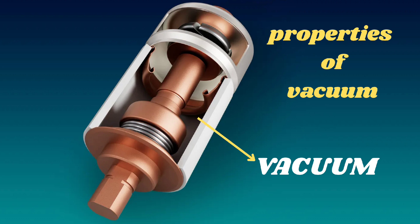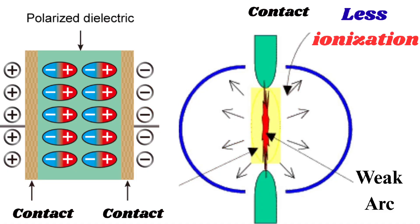Since a vacuum has no particles, including gases, and has extremely reduced pressure, the ionization of the medium is minimized, which reduces the likelihood of arc re-ignition. This unique property ensures reliable current interruption and increased dielectric strength. The vacuum environment provides high dielectric strength, allowing vacuum circuit breakers to withstand high voltages without breaking down. This is the unique property of vacuum that makes it a good arc quenching medium for circuit breakers.